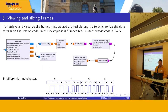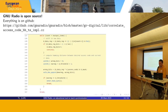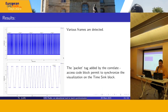Now to retrieve and visualize the frames, we add a threshold and try to synchronize the data stream on the station code. Here it is France Bleu Alsace, whose code is F405, which will be written in differential Manchester. This code must be indicated in the correlate access code block, so a tag named 'packet' is added and we can synchronize the visualization on the time sync block. The fact that GNU Radio is open source is a big advantage for teachers — it allows us to observe how blocks work and understand exactly what's happening. We can easily find the source on GitHub. The correlate access code tag block performs a bit-to-bit comparison to find the access code. We can see that various frames are detected and verify that the block works correctly.